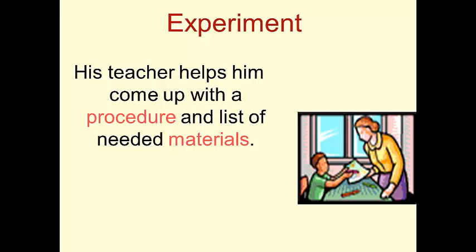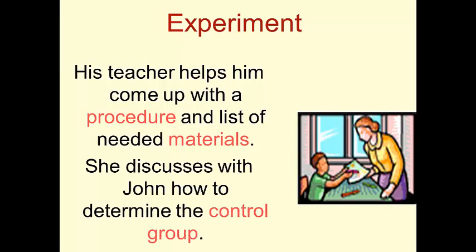His teacher helps him come up with a procedure and a list of the needed materials. She discusses with John how to determine the control group. The control group is usually the amount that always works, that we always know is going to work. So, in this case, he's going to use the amount that grandma has always used. And I believe that's 50 grams.